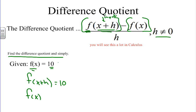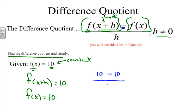This is what we refer to as a constant function. f of x is 10 as well. So when we write this out: f of x plus h, which is 10, minus f of x, which is 10, all over h. We have 10 minus 10, which is 0, all over h. So our answer is simply 0.